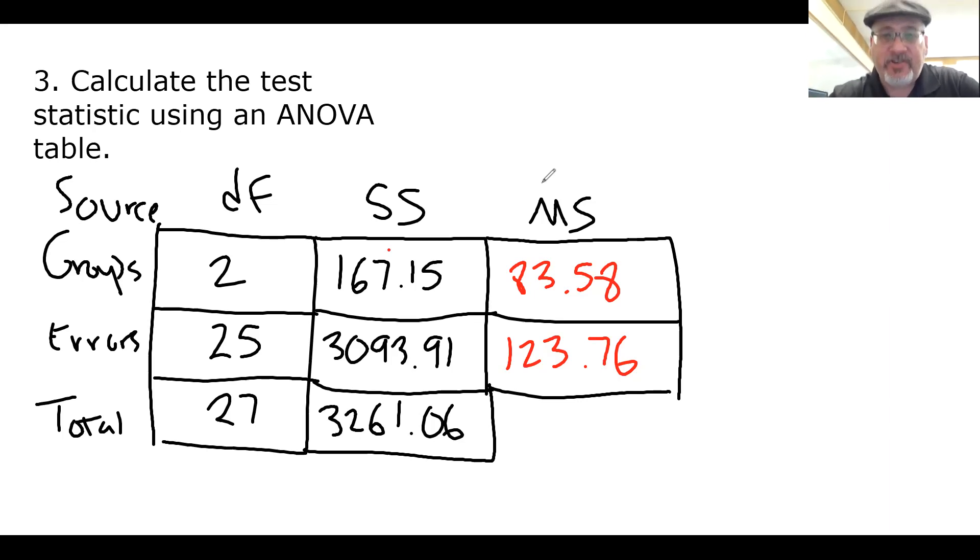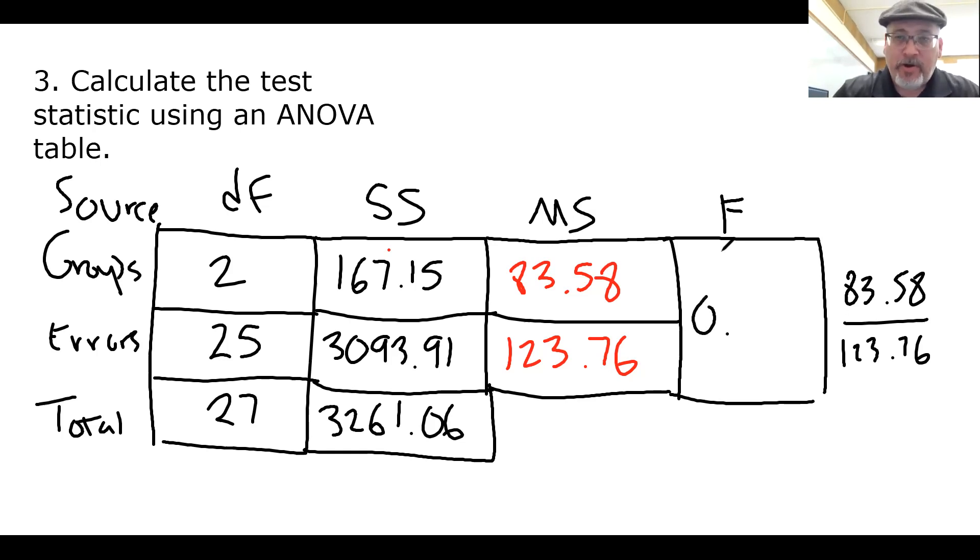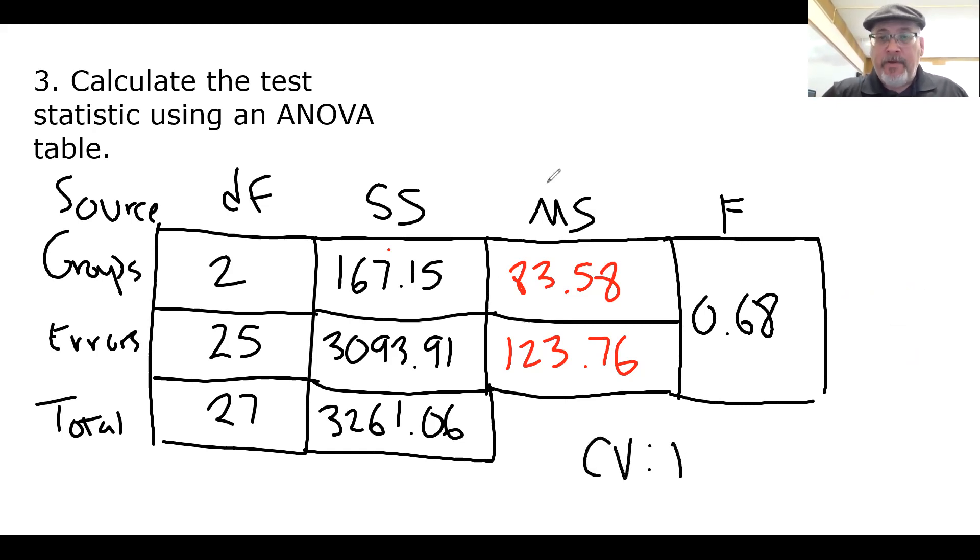And lastly, we calculate our F statistic. It takes a while to get through the table, especially when you have to calculate the SS's manually. Sometimes the SS's are given to you. For our F statistic, simply calculate the MSG value, 83.58 divided by the MS errors value, 123.76. So 83.58 divided by 123.76 to two decimal places is 0.68. That's where it kind of slows down depending upon how much information you're given. But we do have our test statistic: F equals 0.68. And at this point, we're ready to make our decision.